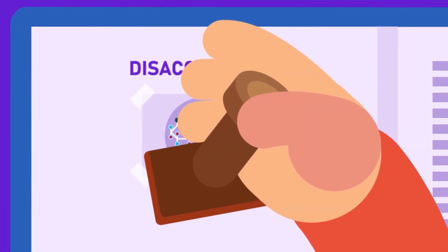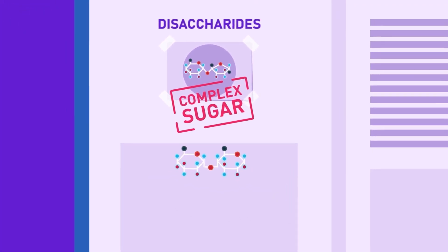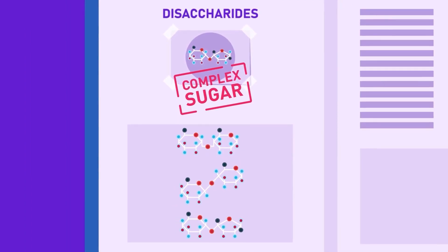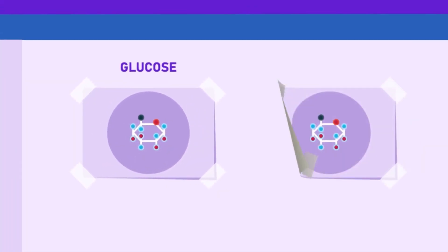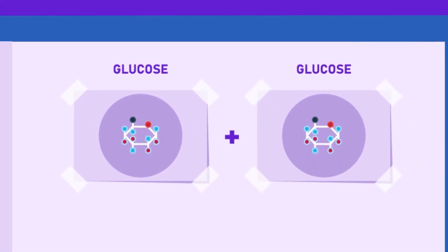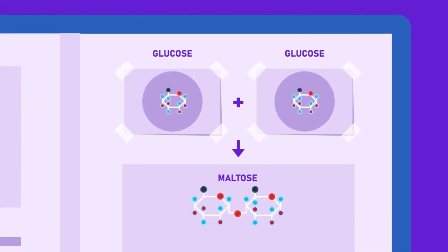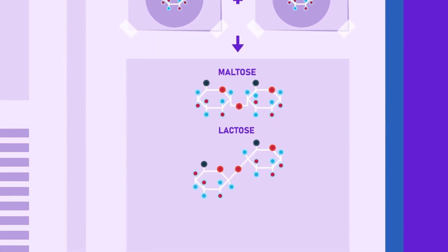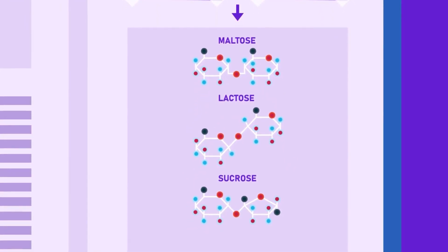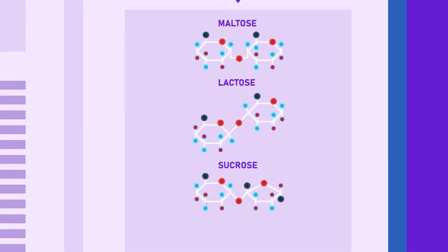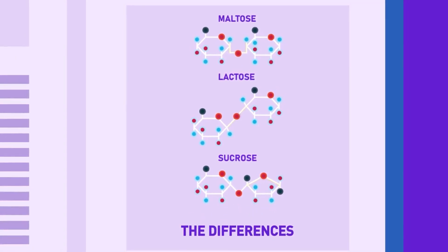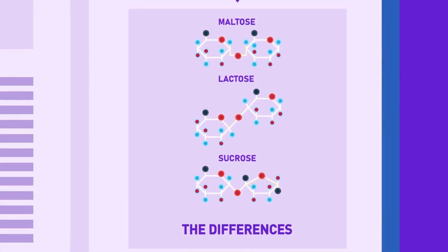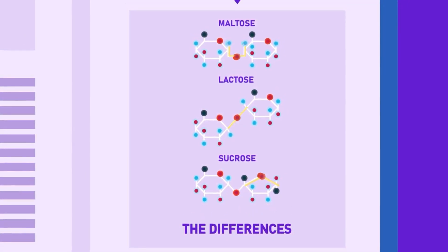Disaccharides are also known as complex sugars, as they have complex chemical compositions. Maltose, lactose and sucrose are their examples. Disaccharide structure molecules are made up of two molecules of simple sugars condensed together. The most common types of disaccharides have 12 carbon atoms, with the general formula C12H22O11. The differences in the disaccharides are due to the different atomic arrangements within the molecule.